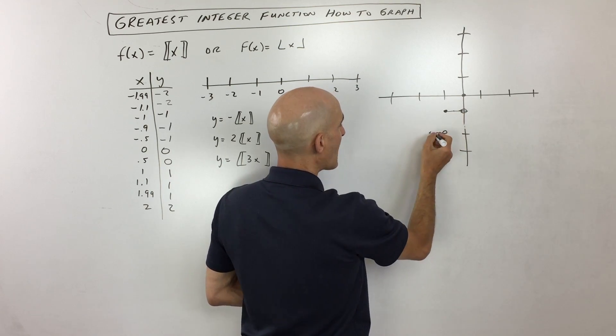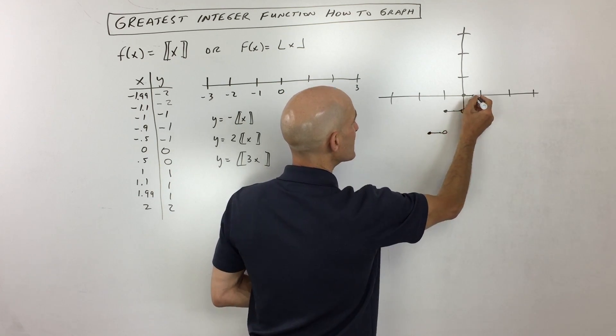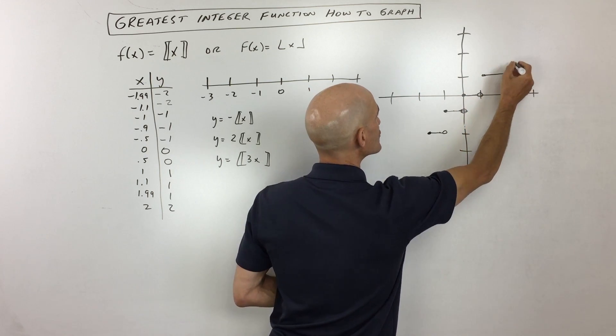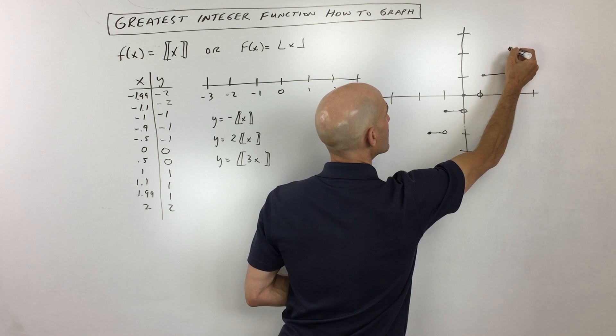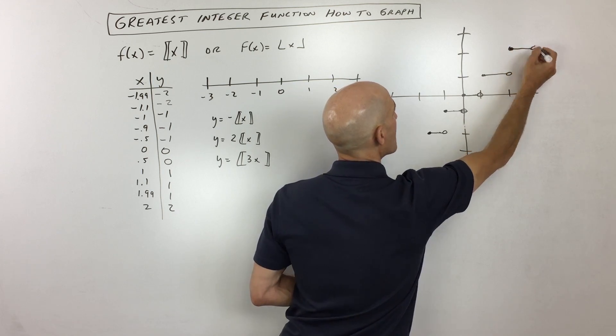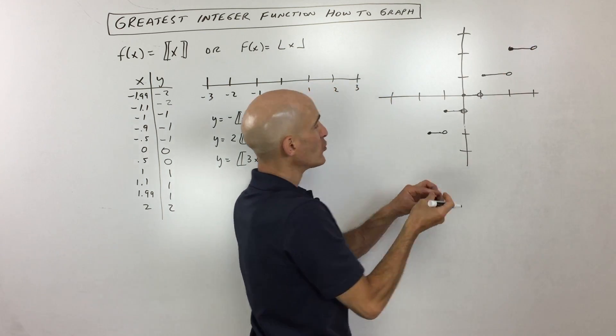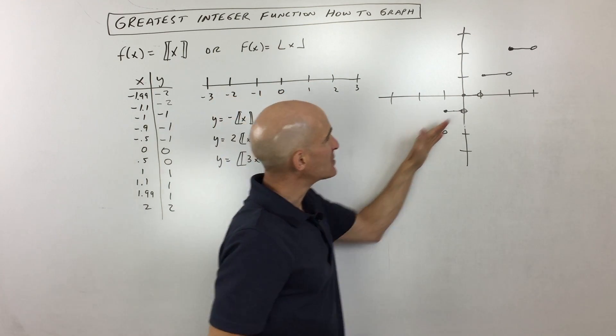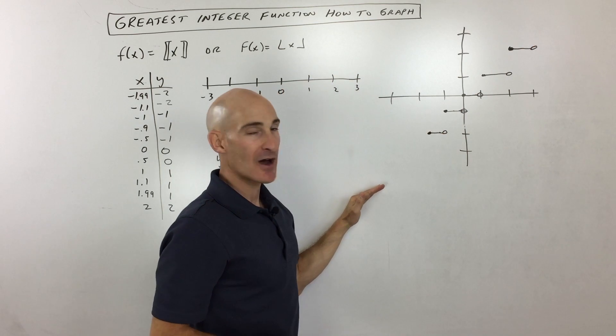So what you can see is after you plot a few of these, you're going to get the pattern. And then you can just go ahead and draw those stairs or steps from there. And you'll notice that when you're doing this, the closed portion of the graph is on the left and the open is on the right. So this is your basic graph and it continues up to the right and down to the left like that.